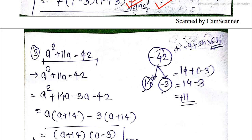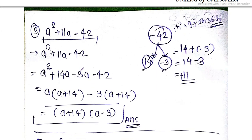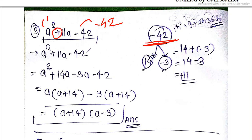A² + 11A - 42: I will solve this. We have minus 42, so what will we do? A² plus 14 into — we need two numbers whose product is minus 42. Which answer is minus 42 equal? This is the factoring process for minus 42.